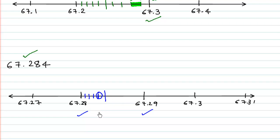This is 67.282, this is 67.283, this is 67.284 the one that we require, this is 67.285, this is 67.286, 67.287, 67.288, 67.289 and this would be 67.290 or 29. So here lies 67.284.